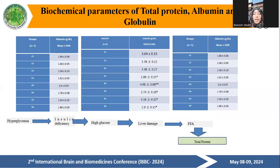Biochemical parameters of total protein, albumin, and globulin: hyperglycemia increases insulin deficiency, high glucose level causes liver damage. Free fatty acids decrease, and total protein also increases.